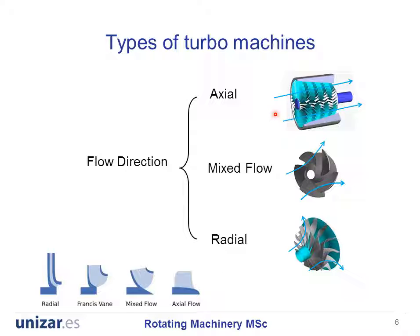In axial machinery, the flow goes along or parallel to the principal axis or shaft of the machine. In radial direction machines, the flow enters usually aligned with the axis of rotation and then turns about 90 degrees and leaves the machine in a radial direction. In mixed flow machines, the flow usually enters along the axis and leaves the machine at a certain angle with respect to the axis of rotation. Here you can see a meridional view of different rotors of hydraulic machinery — from left to right, radial, mixed flow and axial machinery.